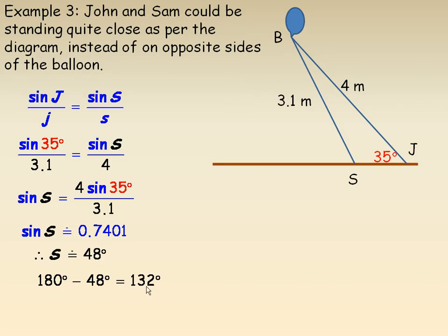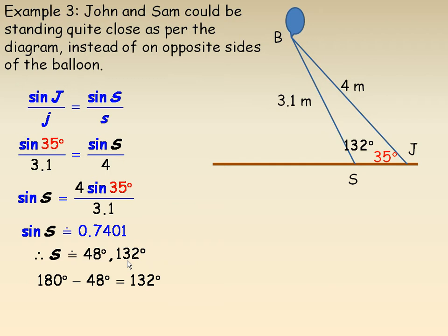So there's another angle: 132 degrees. The sine of this is also 0.7401. There are two angles — 48 degrees belongs to the diagram on the previous page, and in this diagram, angle S is obtuse, over 90 degrees, so it would be 132 degrees.